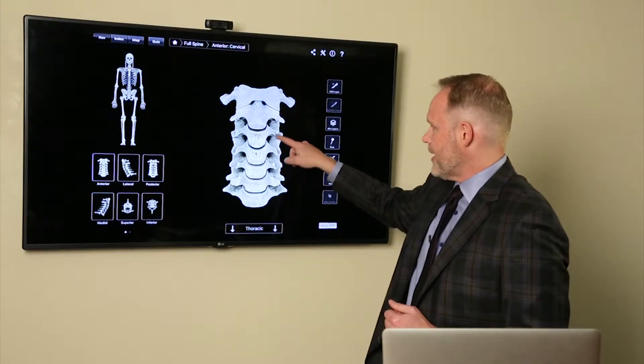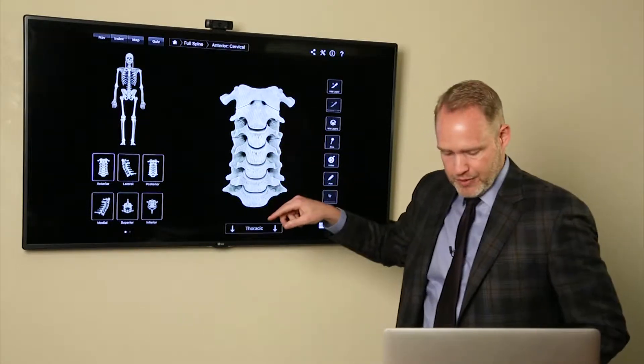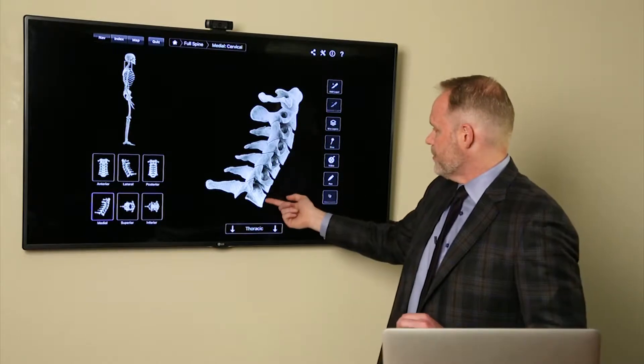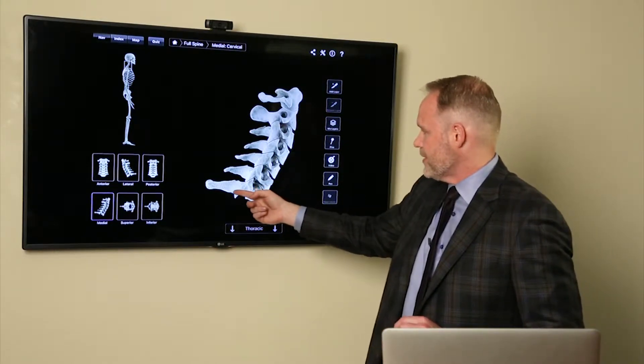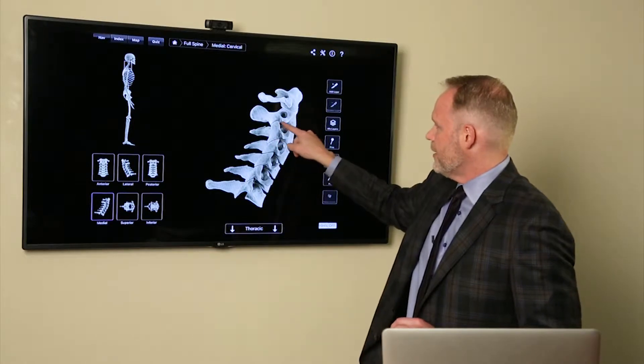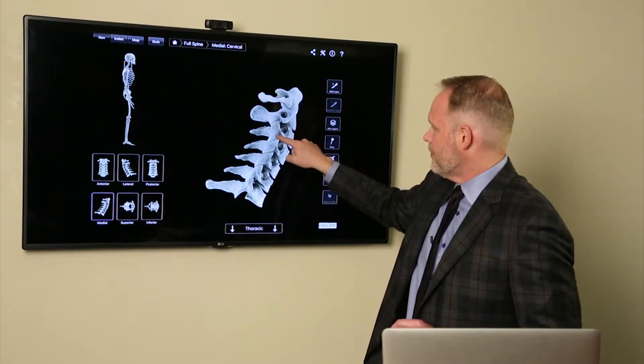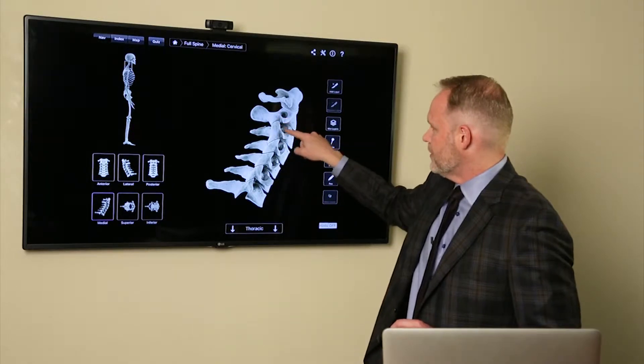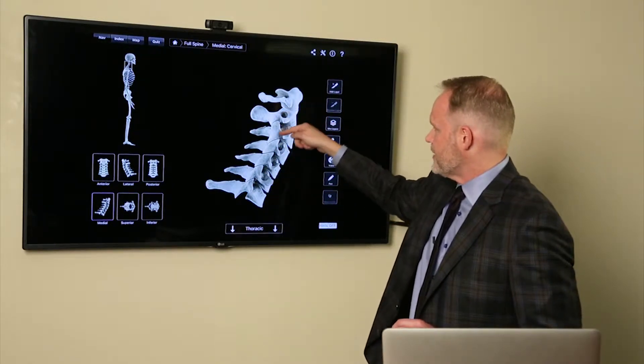These are called spinous processes. Excuse me, the sides are called spinous processes. These are called vertebral bodies, and these are spinous processes. And you can see here, visualized, between each level, there is an area where, for example, this level is going to meet this level, this level meets that level.